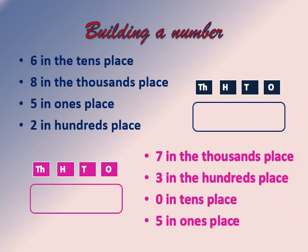Now let us learn how to build a number. You have to build a 4-digit number using four clues shown in blue on the screen. Put the numbers in the correct place values: 6 in the 10s place, 8 in the 1,000s place, 5 in the 1s place, and 2 in the 100s place. When we arrange them correctly, the number is 8,265. There are also four clues in purple for you to form another number by yourself.